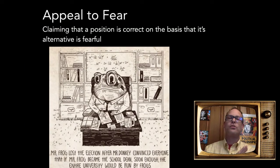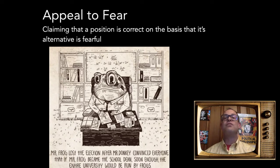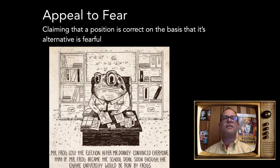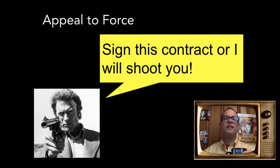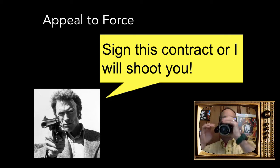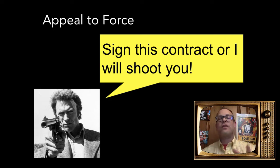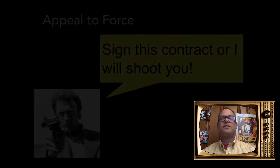Appeal to fear: claiming that a position is correct on the basis that its alternative is fearful. Mr. Frog lost the election after Mr. Donkey convinced everyone that if Mr. Frog became school dean, the entire university would be run by frogs. Appeal to force is different — nobody's being physically forced — but people are made fearful of the alternative. 'Sign this contract or I will shoot you' — that's appeal to force, like The Godfather's offer you can't refuse. It's fallacious because whether you should sign the paper has to do with things other than being killed.